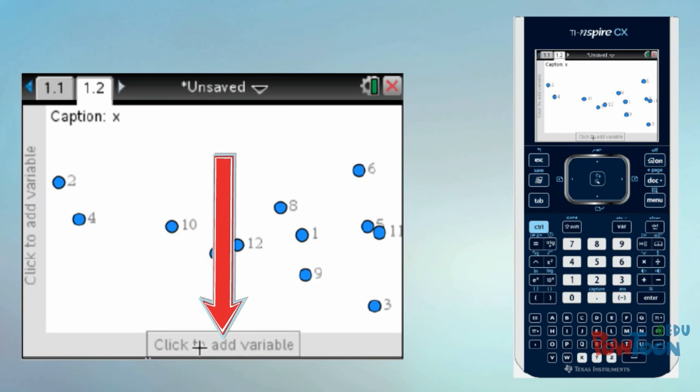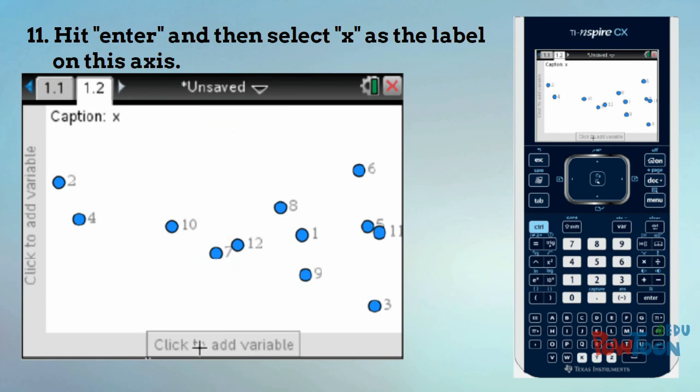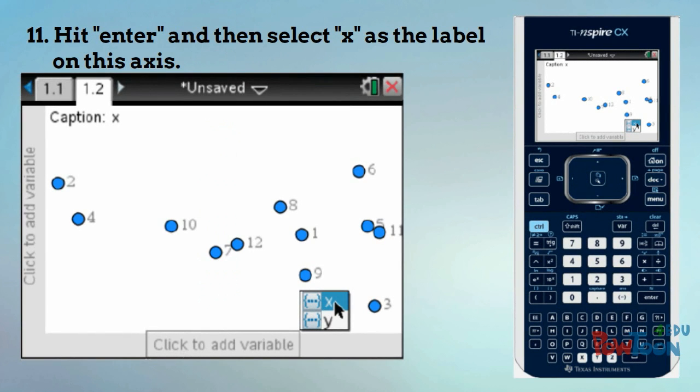You need to move your arrow to the bottom of the screen to highlight where it says click to add a variable. Click it and then click X.